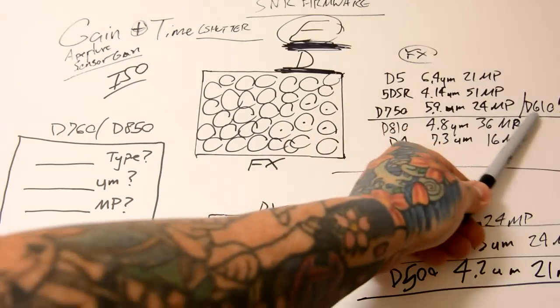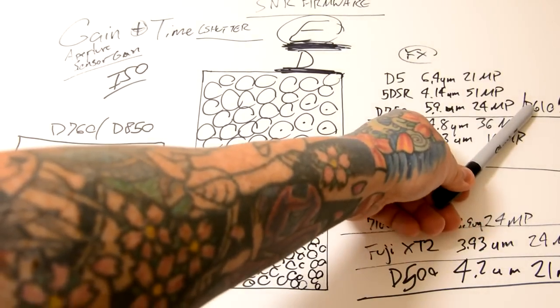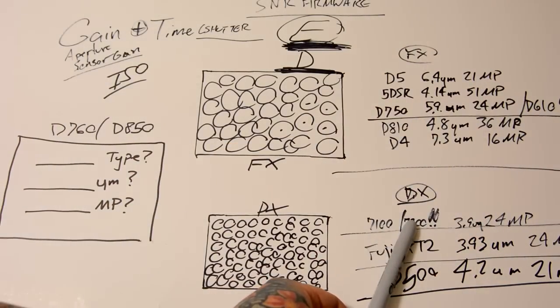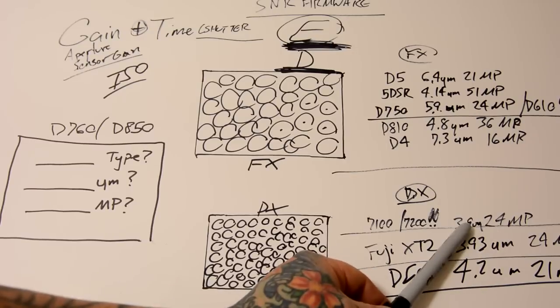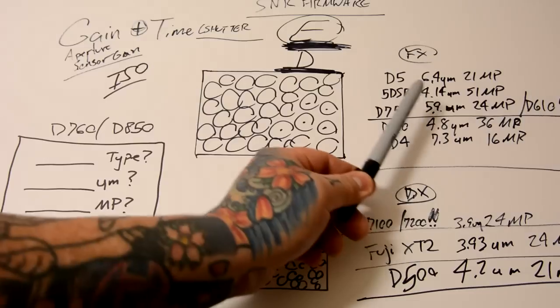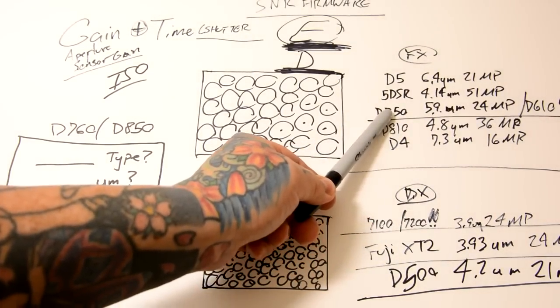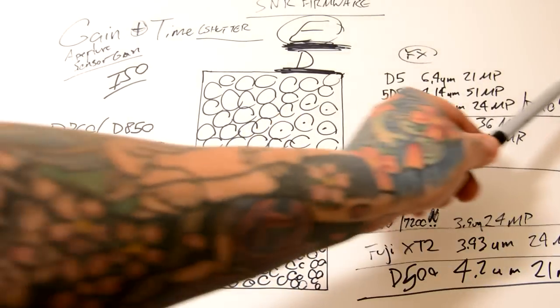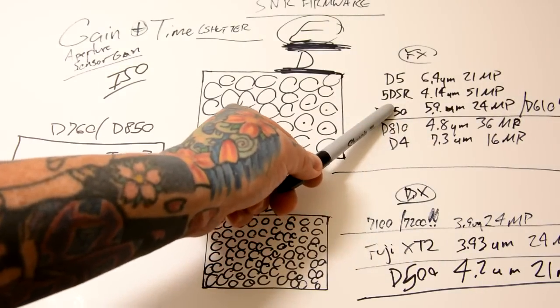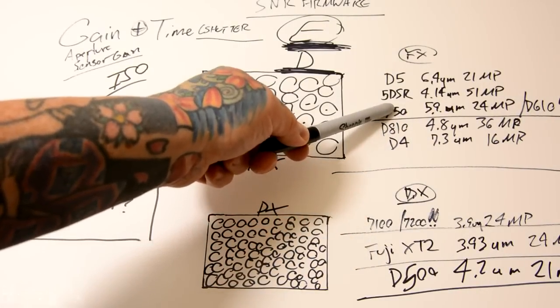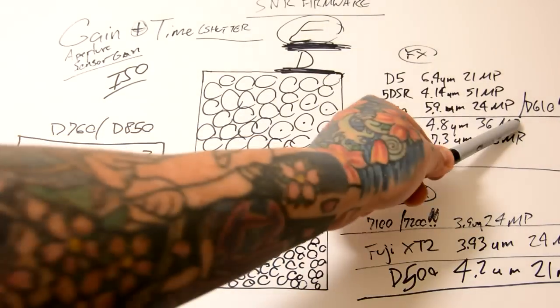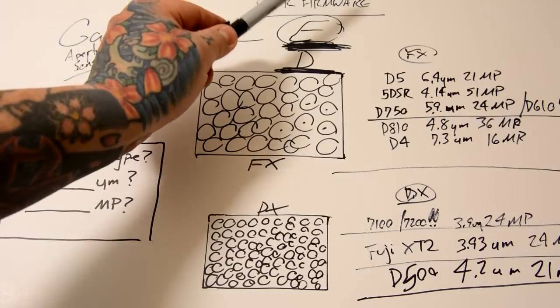Nikon D750 and the D610 are the exact same sensor. Nikon D7100, D7200, exact same sensor. 3.9 micrometer pixel pitch, 24 megapixels, also 24 megapixels on the Nikon D750 at 5.9 micrometers. Now, why is the D750 much more efficient, especially at high ISO performance and low light than the D610? It is efficiency.